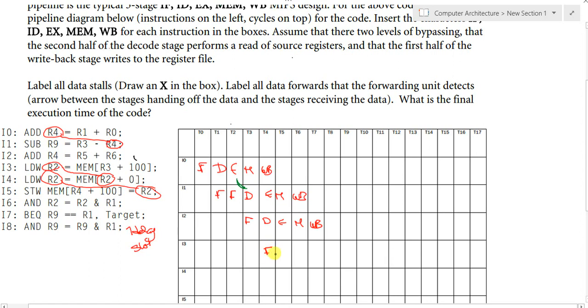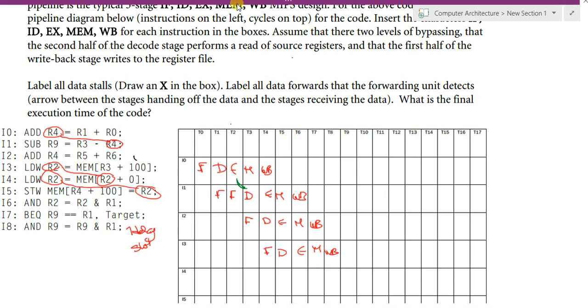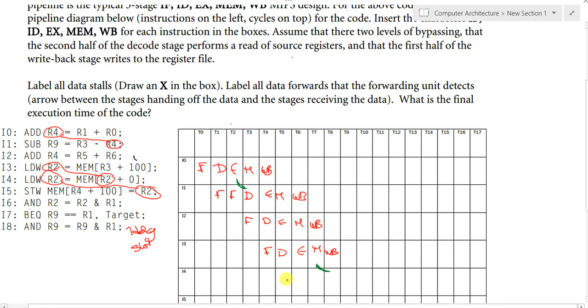I3 doesn't have a problem. Fetch, decode, execute, memory, and write back. I4, we start having a problem from I4. What is the problem? The problem is that we need to get the value of R2 and it's not yet available. So when will the value of R2 be available? Is it available after the execute stage? Unfortunately not because it's a load operation. The load operation makes the value available after it fetches it from the memory. So it will be available after the memory stage. So I can start bypassing here.